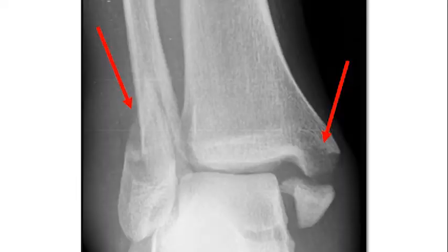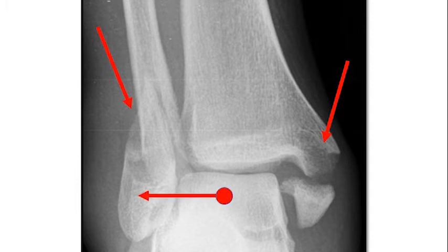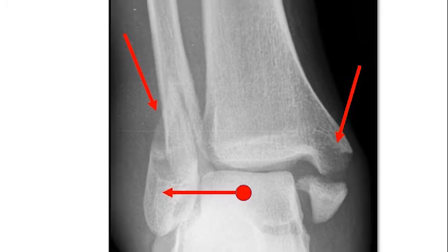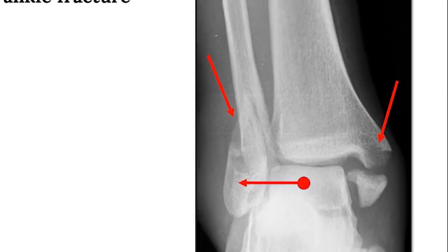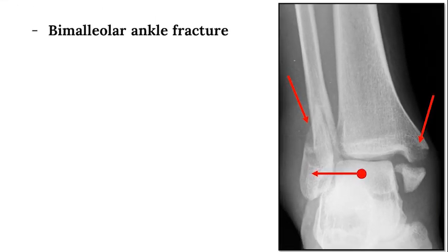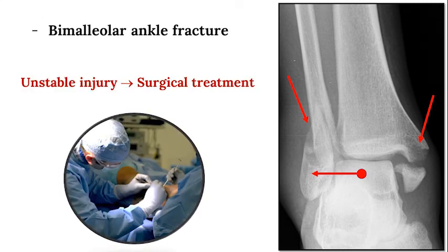This is an example of a bimalleolar ankle fracture, with the x-ray demonstrating fracture of the lateral malleolus and the medial malleolus, and there is a corresponding subluxation of the talus within the plafond. Given the fact that the lateral malleolus is fractured in the setting of a fracture of the medial malleolus, this is an unstable injury and requires surgery.